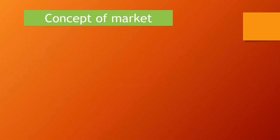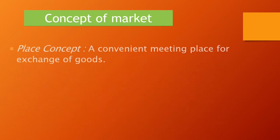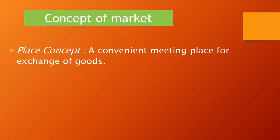The first is the Place Concept. A market is a convenient meeting place where buyers and sellers gather together to conduct buying and selling activities. Examples include a spot cash or physical market, as well as wholesale and retail markets.